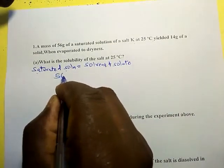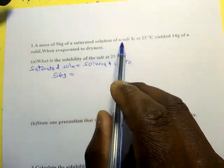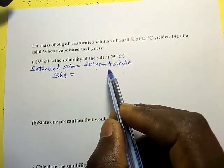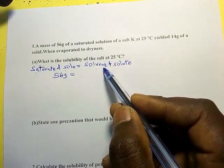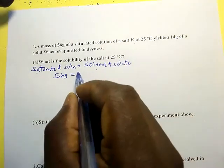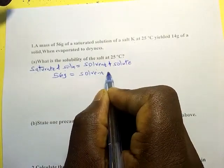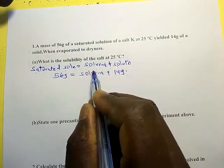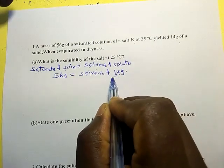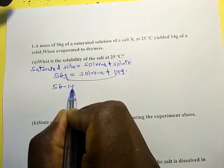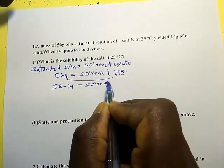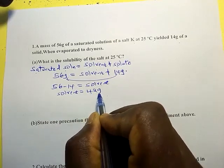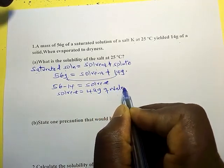The saturated solution is 56 grams. We are told that it yielded 14 grams of solute. The mass of solute dissolved in water is 14 grams. We can get the mass of the solvent by simple subtraction: 56 minus 14 gives us 42 grams of water as the solvent.